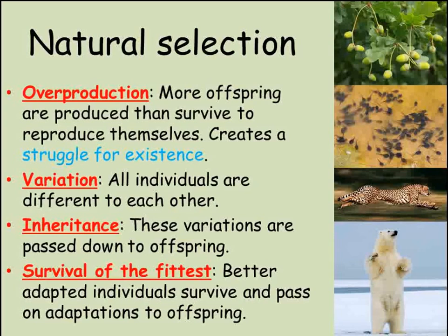Darwin also saw that the individuals within a species all vary. Some acorns are larger than others. Some cheetahs can run faster than others. Some polar bears are better insulated by their fur than others. Darwin also recognised that much of this variation was inherited — individuals are similar to their parents. Darwin suggested that the differences between individuals, the variation within a species, gave some individuals a greater chance of survival than others. In the struggle for existence, the better adapted individuals would be the ones that survive.